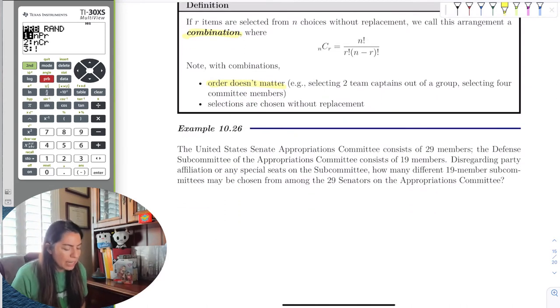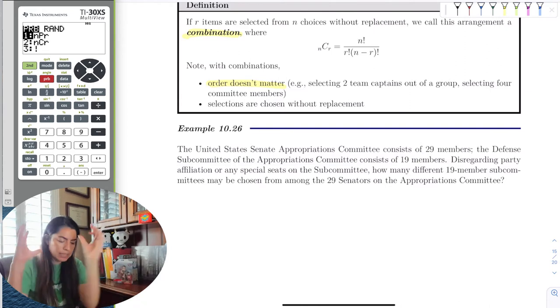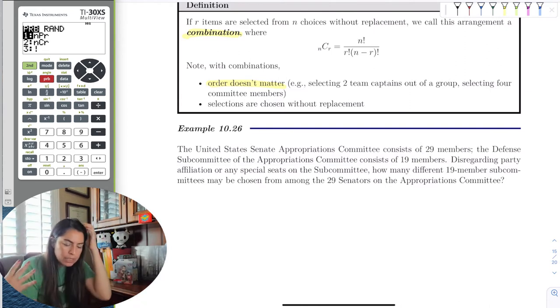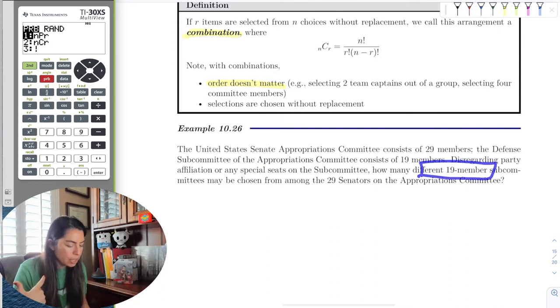So the US Senate Appropriations Committee consists of 29 members. The defense subcommittee of appropriations consists of 19 members. So there's 29 and then a subcommittee is 19. Disregarding party affiliation or any special seats, how many different 19 member subcommittees could be chosen from 29.